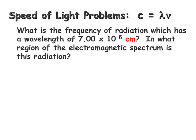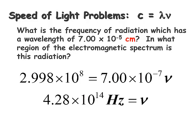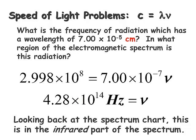Our final problem: what is the frequency of radiation with a wavelength of 7.00 × 10⁻⁵ centimeters? Be careful — always read these questions carefully, because wavelengths should be in meters. So before plugging this value in, we must convert it into meters. Plugging in our values and solving for nu, we find the frequency is 4.28 × 10¹⁴ hertz. Notice we used 7.00 × 10⁻⁷ for the wavelength — not 10⁻⁵ — because we needed to convert to meters first. Looking back at the spectrum chart, this radiation is in the infrared part of the spectrum.